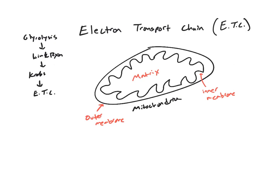The inside portion is the matrix where Krebs cycle takes place. The space between the inner and outer membrane is called the inter-membrane space. And these little knob-like structures in the inner membrane are called cristae.